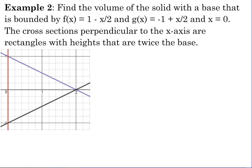Let's look at the volume of a solid with a base bounded by 1 − x/2 and −1 + x/2 and x = 0. The cross-sections perpendicular to the x-axis are rectangles with heights that are twice the base. The purple curve is 1 − x/2 and the darker one is −1 + x/2. They intersect at x = 2, and x = 0 tells you to start on the y-axis. So we already know our integral runs from 0 to 2.